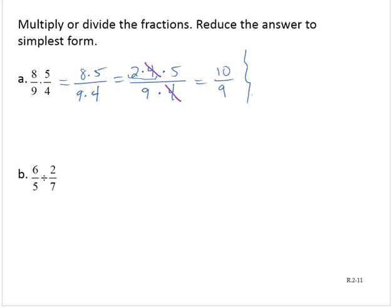I could have also said, well, 8 times 5 is 40, 9 times 4 is 36. The greatest common factor is 4. So that's 4 times 10 over 4 times 9. And removing the common factor, we still get 10 ninths.